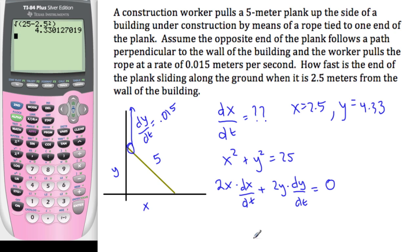Okay, so now we can just start substituting. So when x is 2.5, so that's 2 times 2.5, this is what I want, so dx/dt, plus 2y, so that's 2 times 4.33 times 0.015 equals 0.